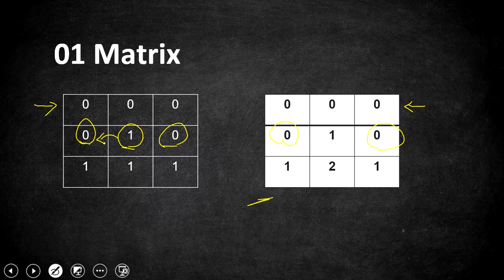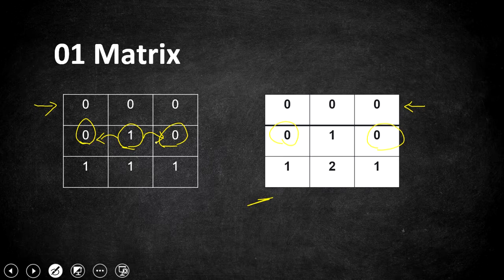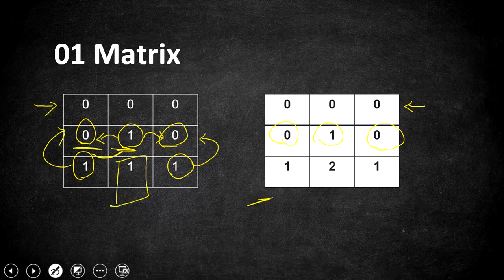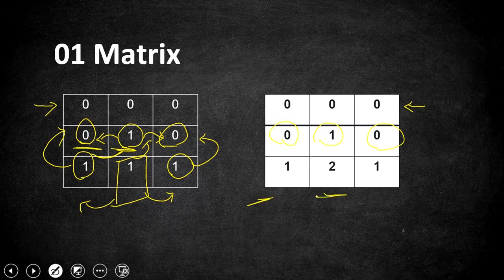Considering the middle cell with value one, the nearest zero is one cell apart on both sides. Since both distances are equal, any value would be okay. The distance between a cell and its adjacent cell is always one, so one zero is present at the very adjacent cell of one, making the distance one. The same applies to the last two ones in the last row, because zeros are available exactly one row apart from each one. The last one in the middle of the last row has adjacent values of one in all three directions.